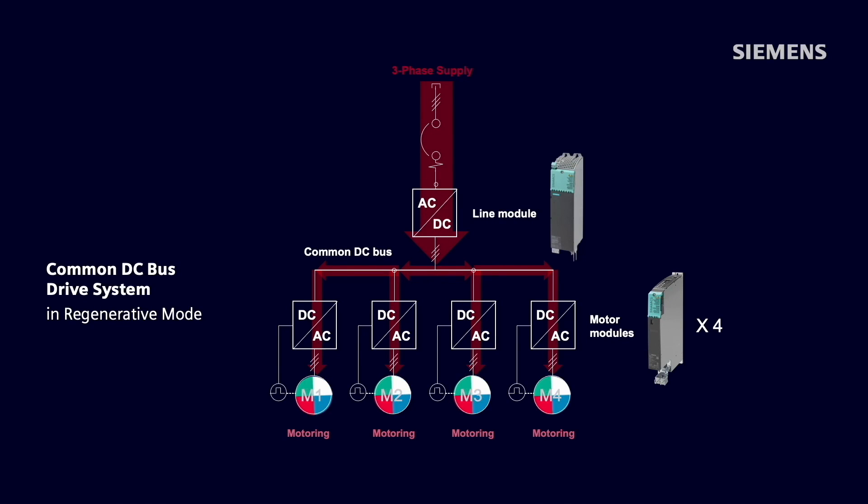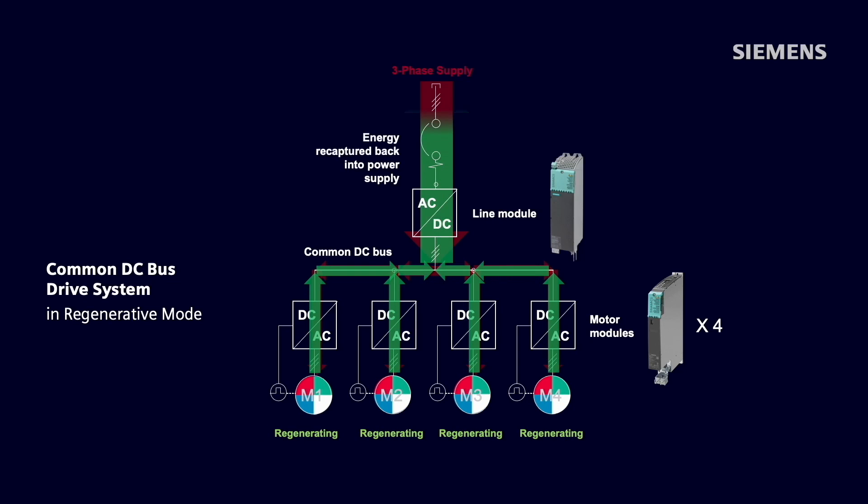Let's also take a look at a machine that has multiple cycles where energy would be regenerating from all axes at the same time. Instead of this power being dissipated across a braking resistor, it makes more sense to recapture this energy back into the power supply. This is where a regenerative line module such as a smart line module or active line module really shine. This not only saves money on power bills, but can also create a very green solution for many applications where a good amount of dynamic load cycle is available for energy recovery.